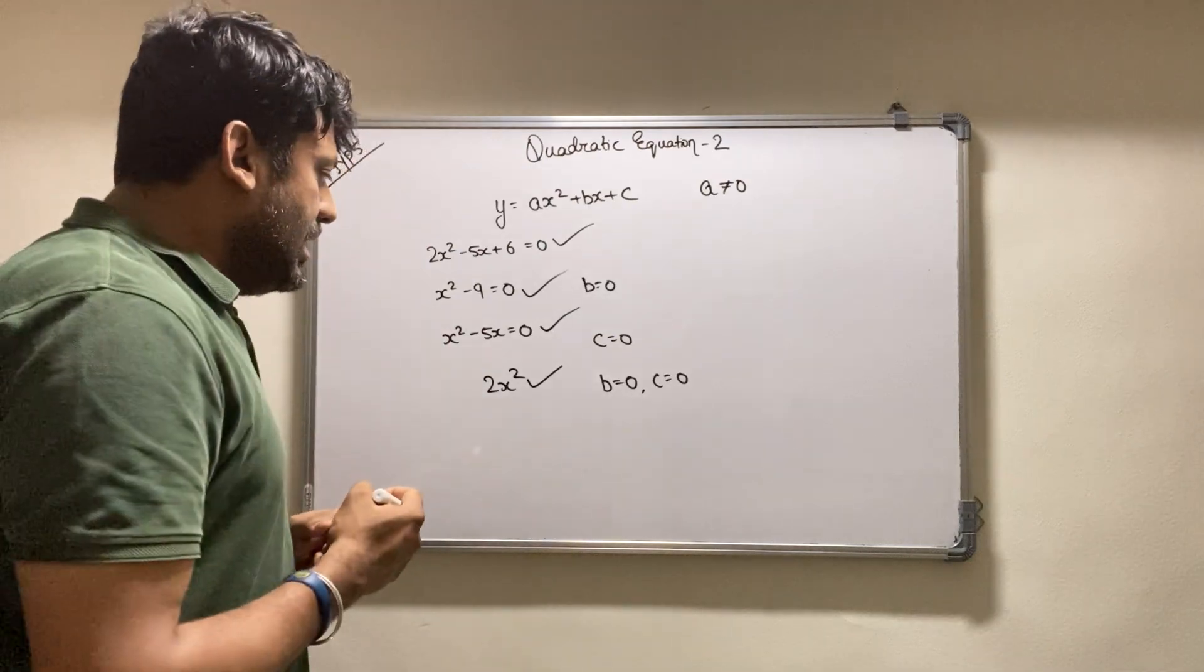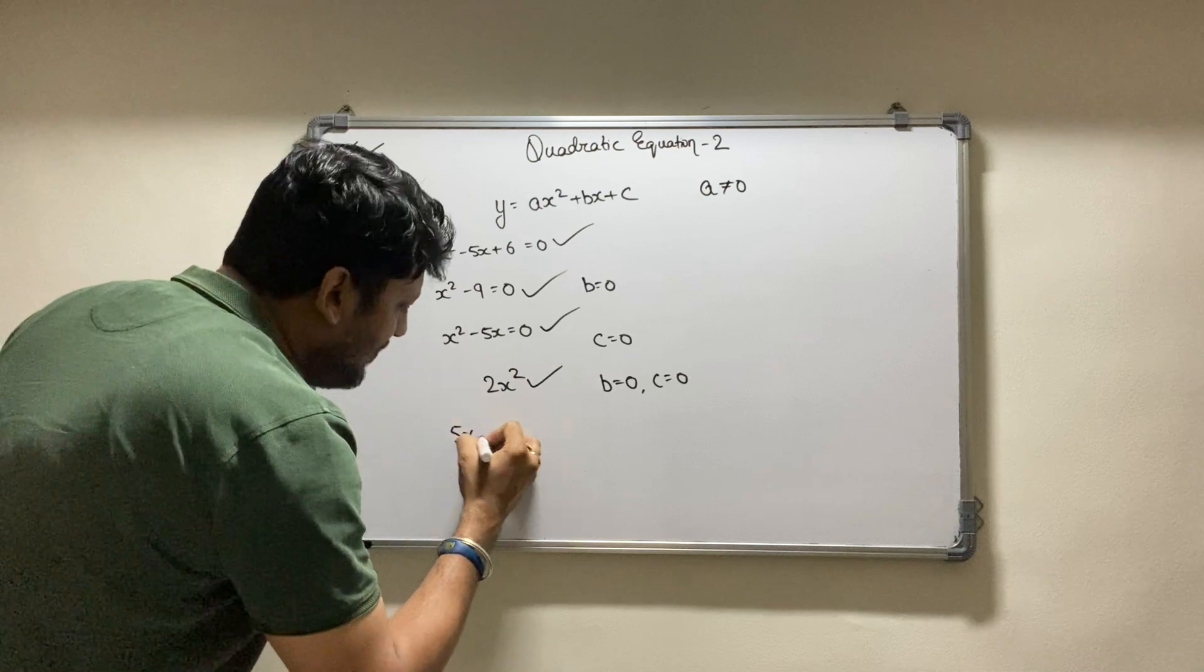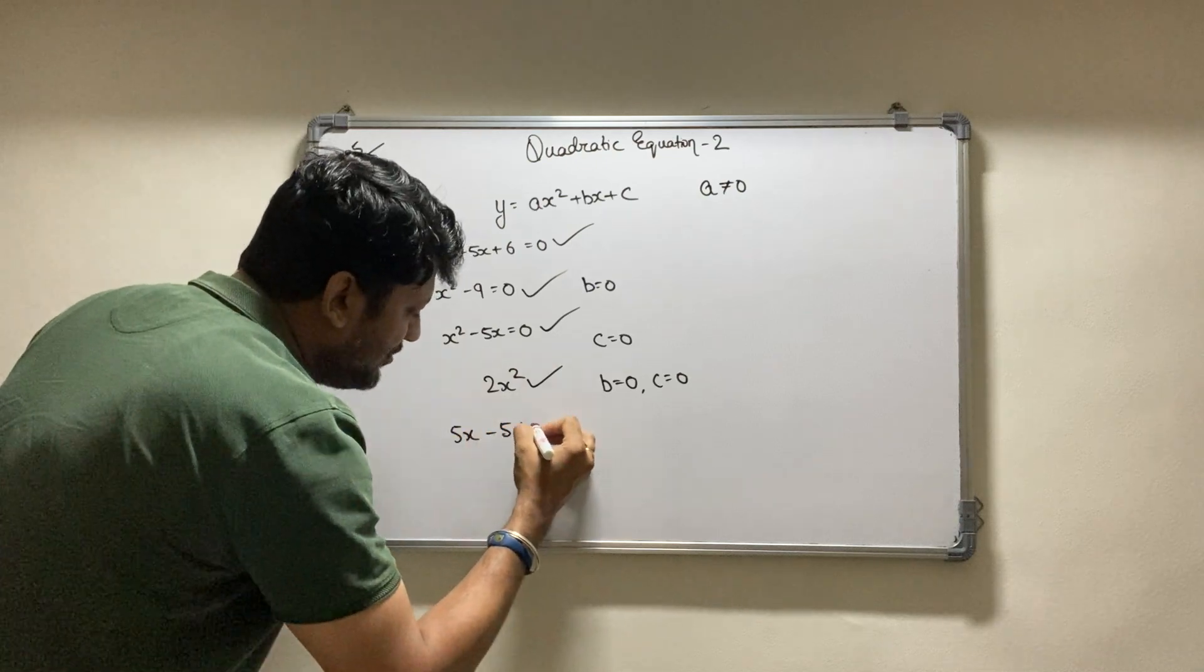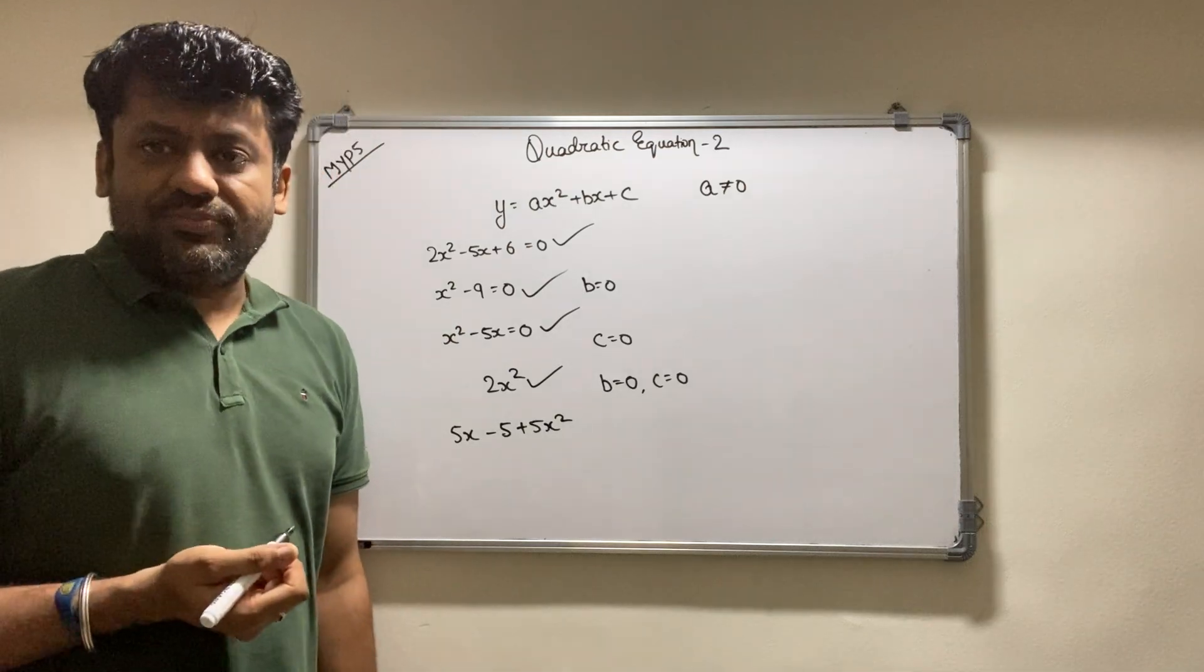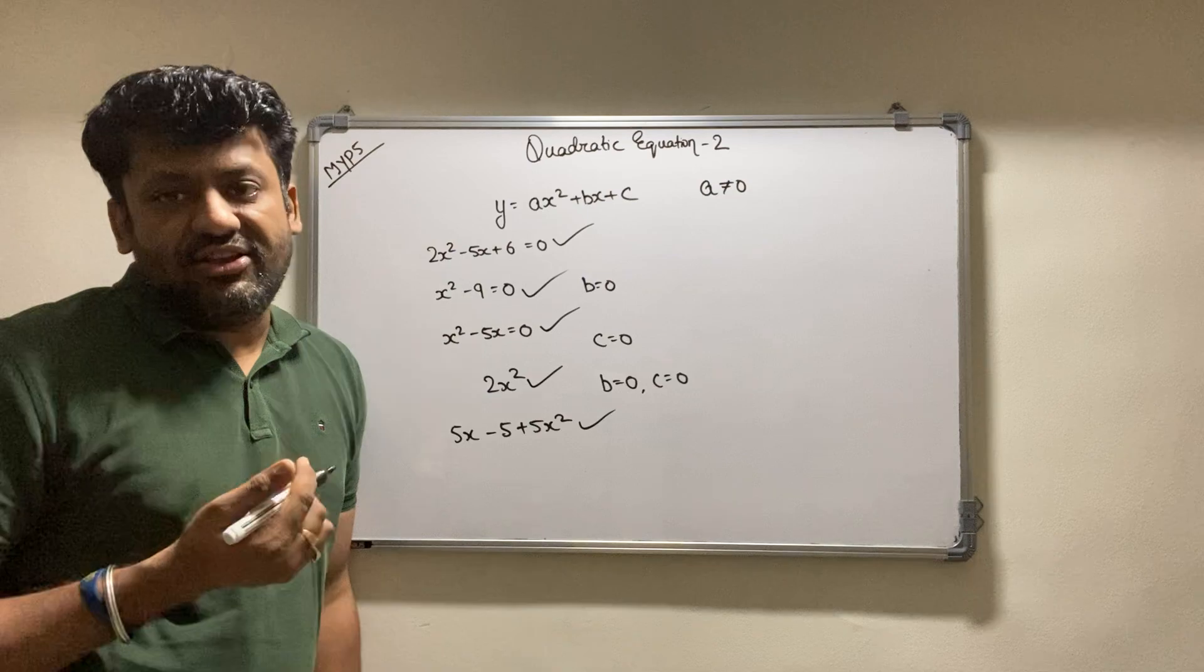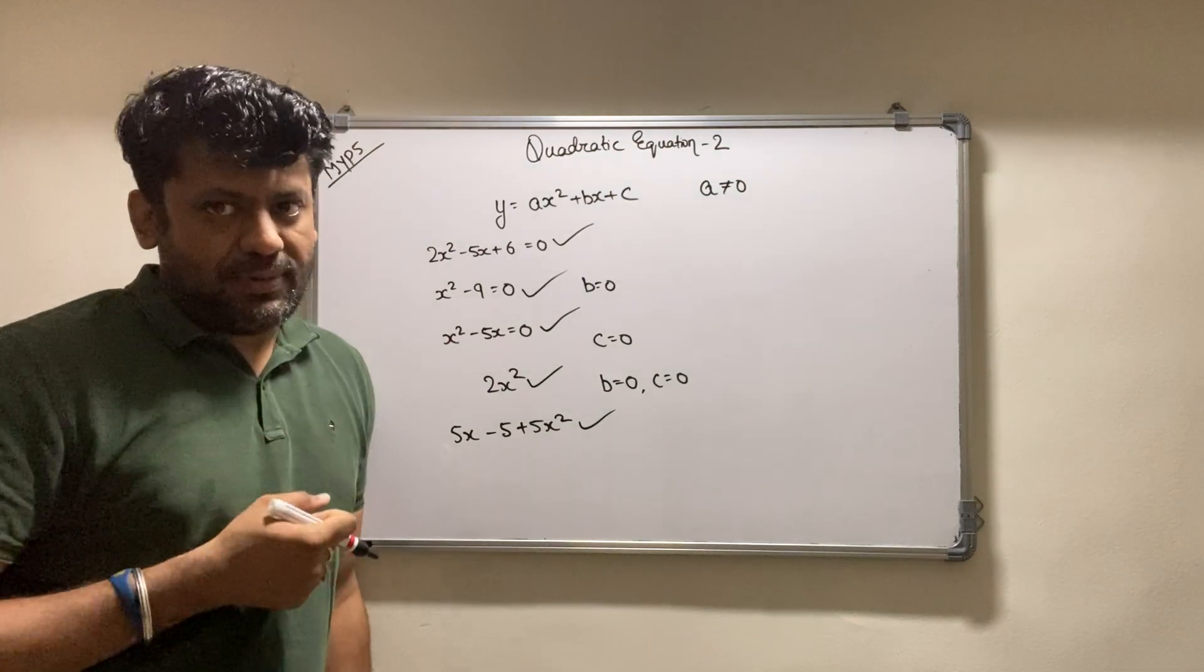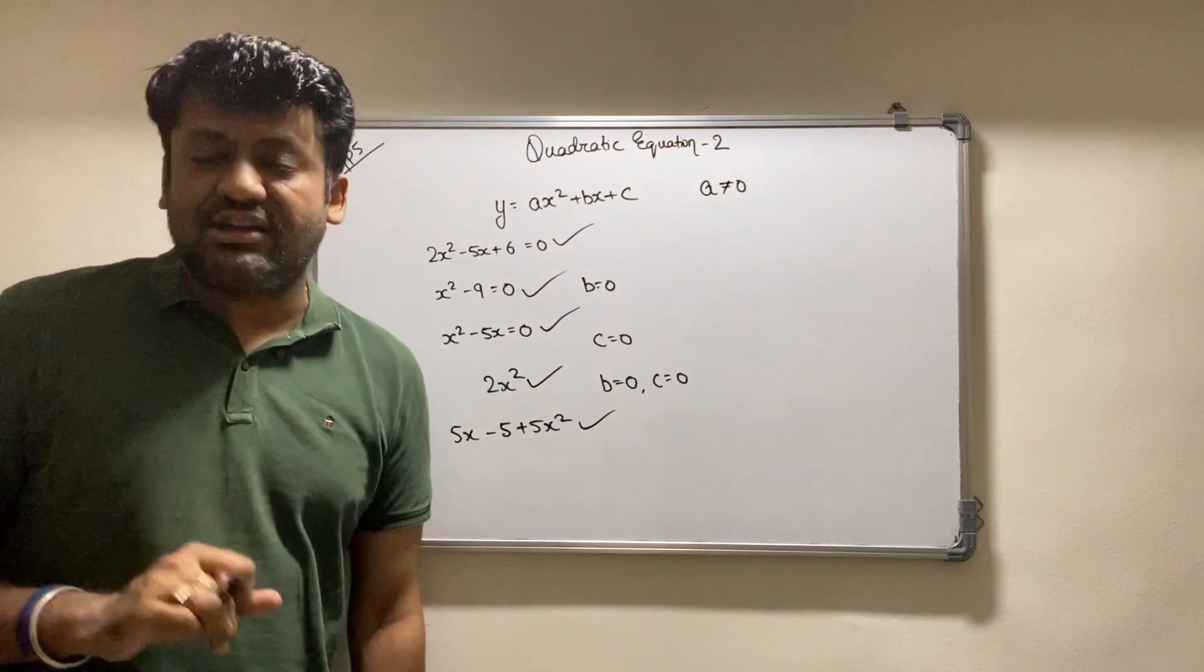Now to confuse you sometimes they can give like this: 5x minus 5 plus 5x squared and they can ask is this a quadratic equation. Yes, this is also a quadratic equation. It's just not rearranged from highest power to lowest power, but the maximum power of this equation is 2, so this is a quadratic equation.